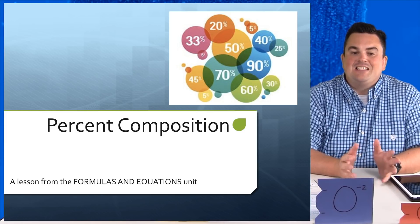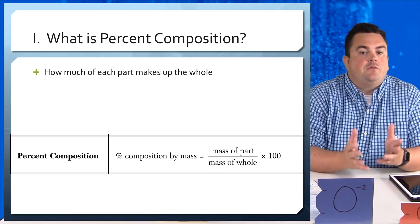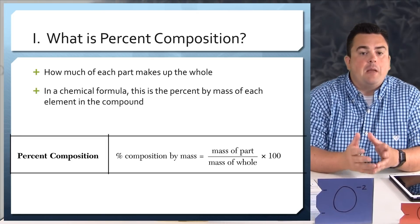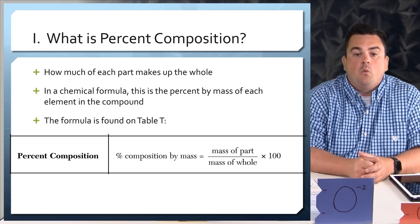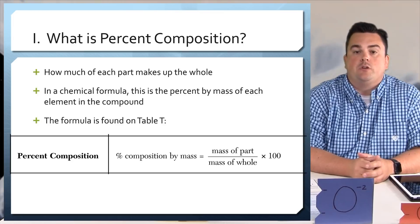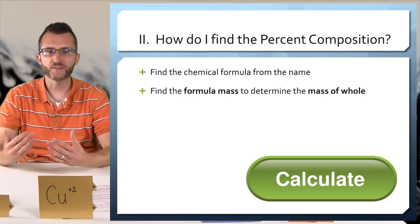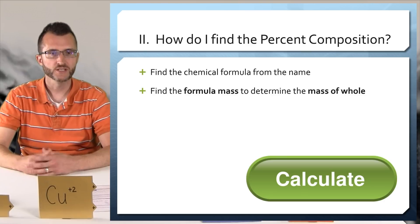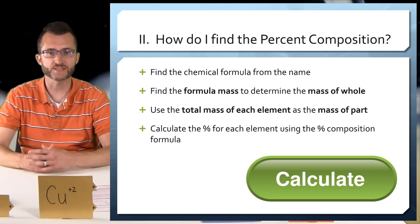Percent composition — a lesson from the formulas and equations unit. So what is percent composition? How much of each part makes up the whole? In a chemical formula, this is the percent by mass of each element in the compound. The formula is found on Table T, where percent by mass equals the mass of the part over the mass of the whole, times 100. To find percent composition: find the chemical formula from the name, find the formula mass to determine the mass of the whole (in grams or u), use the total mass of each element as the mass of the part, and calculate the percent for each element using the percent composition formula.